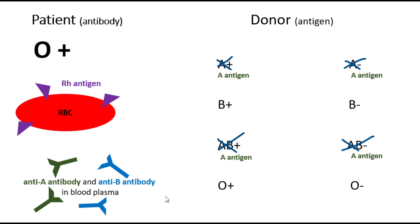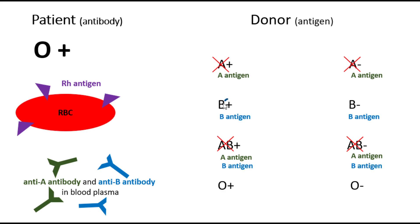Then I focus on the remaining groups. Which one of the remaining groups has B antigen? Those donors also need to be eliminated from the list because my patient has antibody against B antigen. And clearly we know that out of the remaining donors, B positive and B negative both have B antigen. By the way, please keep in mind that in AB positive and AB negative also we have B antigen, but we already eliminated these groups.